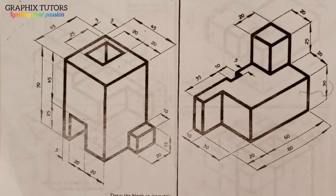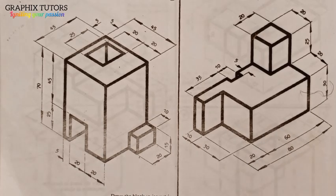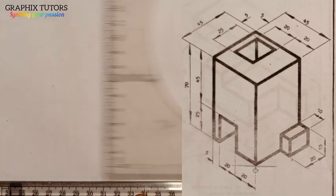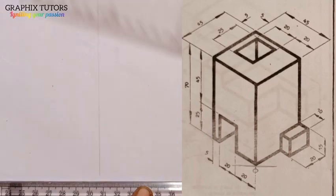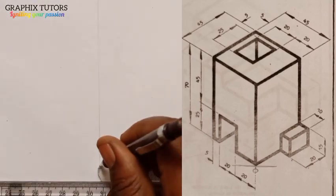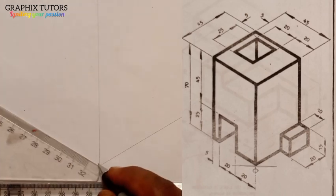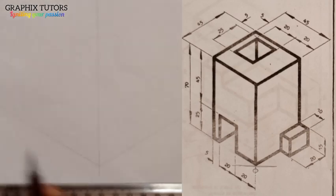Hello everyone, my name is Graphics. Today we want to draw these two blocks in isometric projection. We'll be starting with this one, then later we'll come to the other. When you are given an isometric drawing, the first thing you have to do is draw the isometric axis — that is the X, Y, and Z. So you move your T-square, draw the vertical, and draw the horizontal.